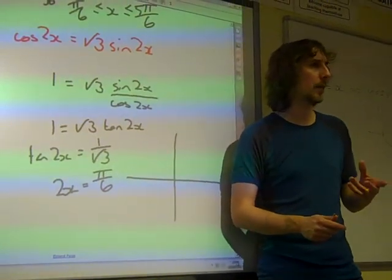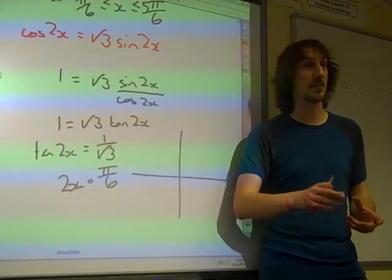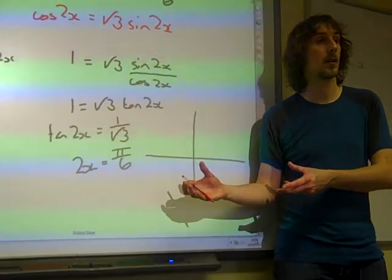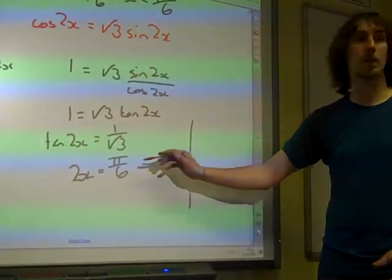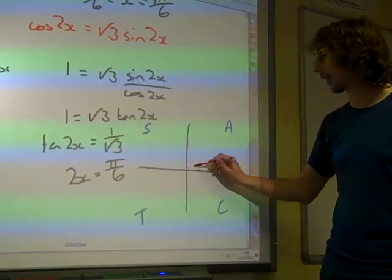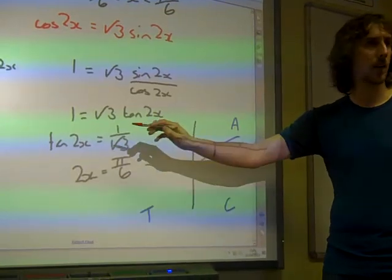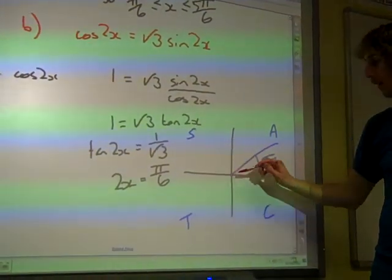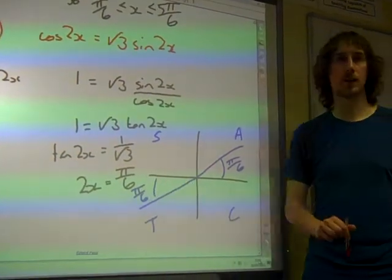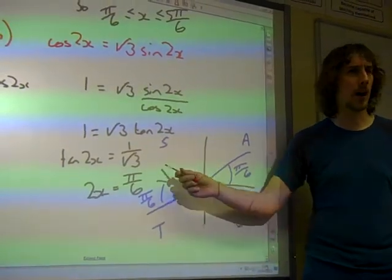We're nearly done. Whenever you're using the CAST diagram, if you're using the CAST diagram, as soon as you calculate it gives you an answer, you have to go straight to the CAST diagram with it. So, as soon as we get π by 6 on the calculator screen, straight to the CAST diagram, it was tan, and it was positive. So, there are the two values.